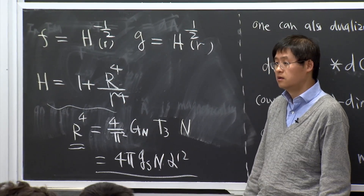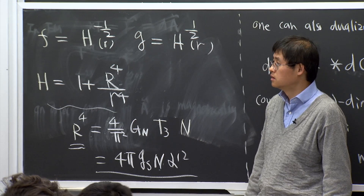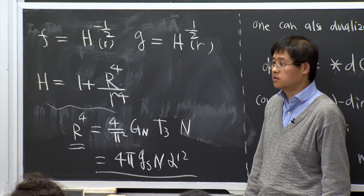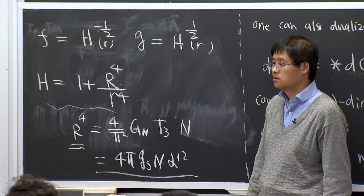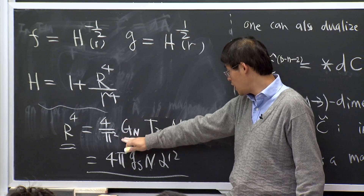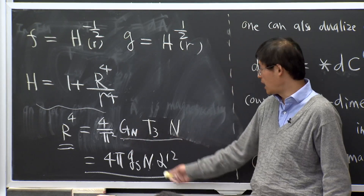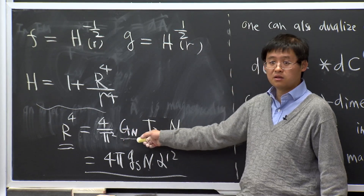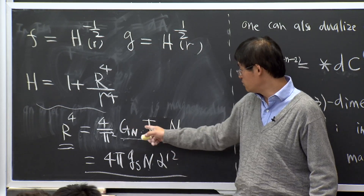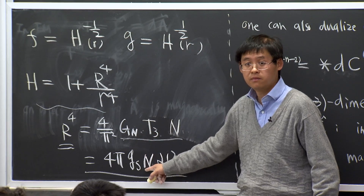A student asks about the charge versus mass relationship. The professor clarifies: for BPS objects, the tension (mass per unit volume) is precisely related to the charge. The parameter r₄⁴ ∝ g_s N α'², since G_N ∝ g_s² and T₃ ∝ 1/g_s, making r₄⁴ ∝ g_s. We will stop here and discuss the meaning of this geometry next time.